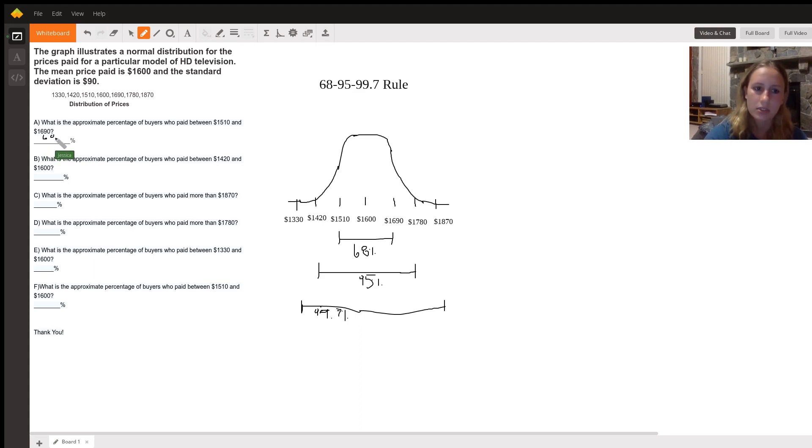And so if we were to skip ahead to F, because I feel like that would be easier to solve now, what is the approximate percentage of buyers who pay between $1,510 and $1,600? That would just be half of 68, because we're looking at this right now, right here. 68 divided by 2 is 34. So for F, it's going to be 34%.